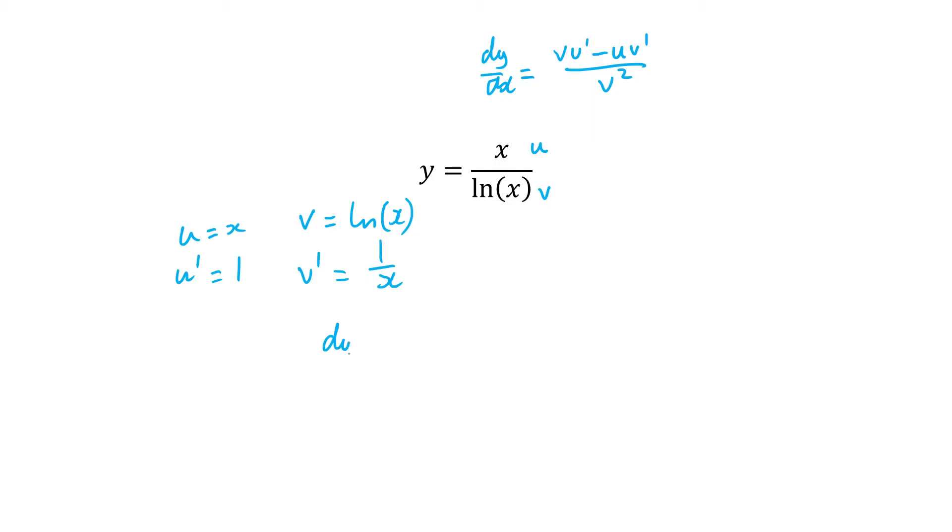Now we just sub them into our equation and we get dy/dx is equal to the natural log of x times 1 minus x times 1 over x and that's going to be all over v squared which is going to be the natural log of x squared.